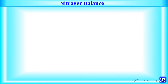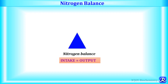Let's first understand what is nitrogen balance. Unlike carbohydrates and lipids, proteins do not have a specific storage form, and a healthy individual eating a well-balanced diet is said to be in a nitrogen balance. This nitrogen balance is a state in which nitrogen ingested in the form of dietary protein each day is balanced by the amount excreted, resulting in no net change in the total body nitrogen content. So intake is equal to output.